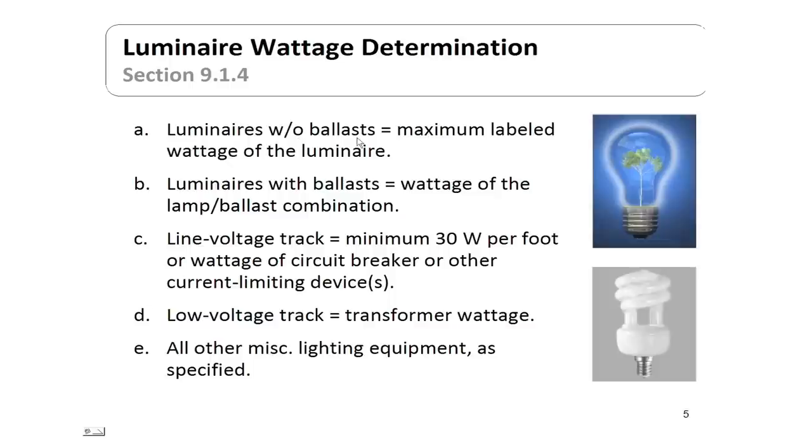One would think it's a simple thing to determine how many watts of light you have in the building by looking at the fixtures, but the standard requires very specific methods for determining the wattage. If you have luminaires without ballasts, the maximum labeled wattage is that of the luminaire. You may screw in a 60-watt bulb, but the ASHRAE standard requires you to count that as a 75-watt fixture, which goes against you on your tally.